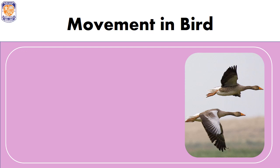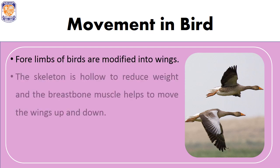Movement in birds: Birds can fly in the air as well as walk on the ground. Some birds are not able to fly, for example ostrich, emu, and kiwi. Some birds can swim, for example duck and swan. The four limbs of birds are modified into wings.